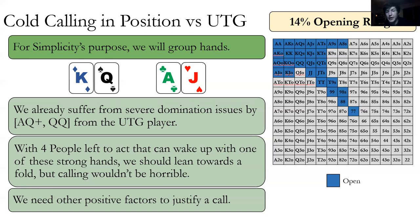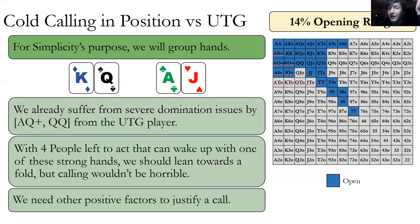We should lean towards a fold — which sounds crazy, folding king-queen offsuit — but yes, if we're against a strong, competent under-the-gun player and we expect the players behind us to also be aggressive enough, we should lean towards a fold. Calling isn't terrible, but we should definitely lean towards the fold here. In reality, a lot of times the under-the-gun player is not a good, tight, defensive player and we can totally call. But if I'm playing at a strong table, I say no — I'm playing ABC poker, no king-queen for me.